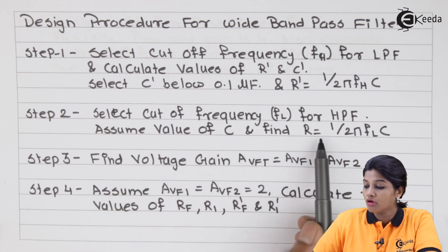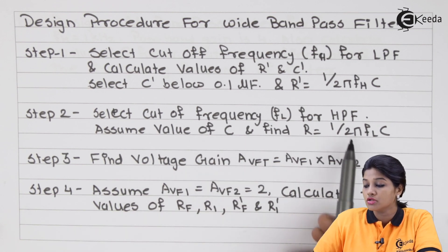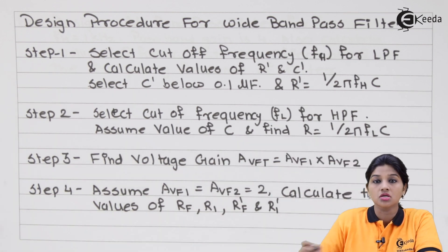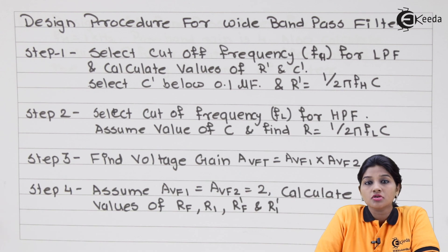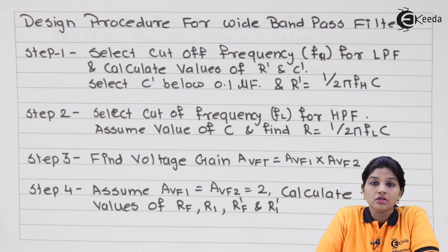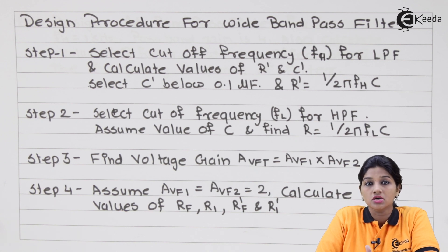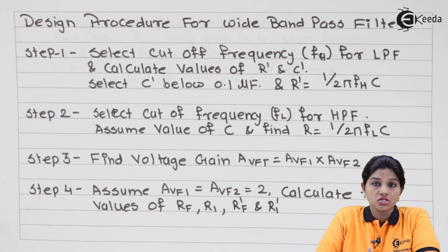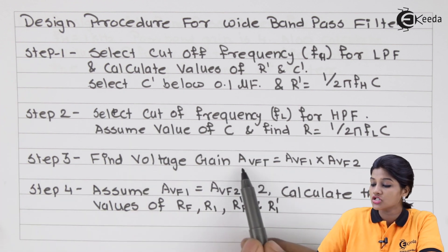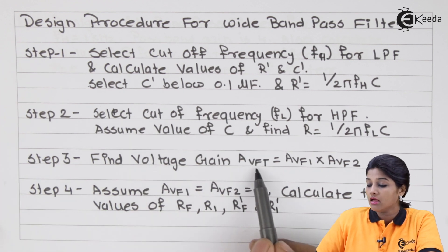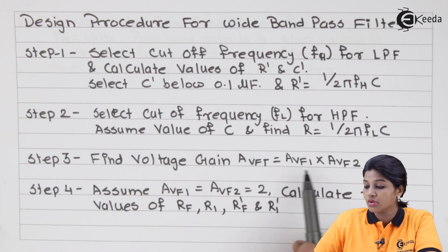The second step is: select cutoff frequency fl — which is usually given in the problem — and assume a value of C, then find R equals 1 upon (2π × fl × C). This process is for designing the high pass filter, because in the case of a high pass filter the cutoff frequency is denoted by fl.